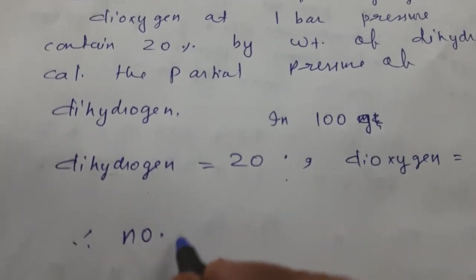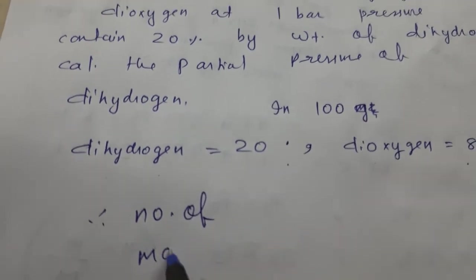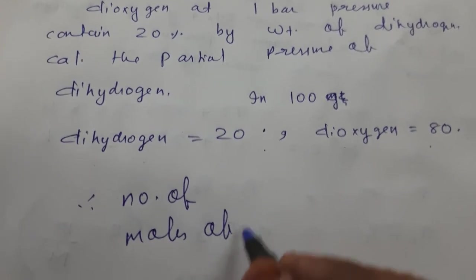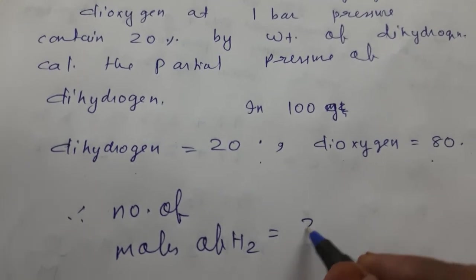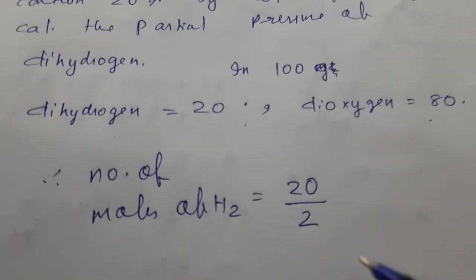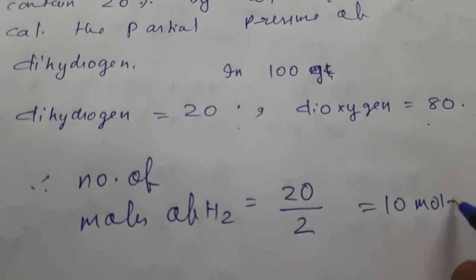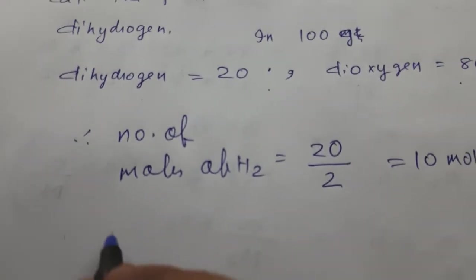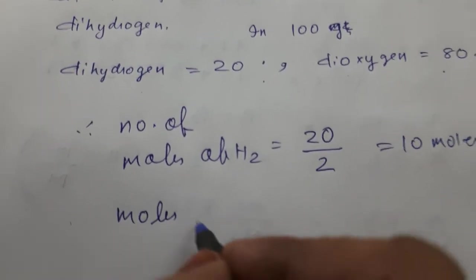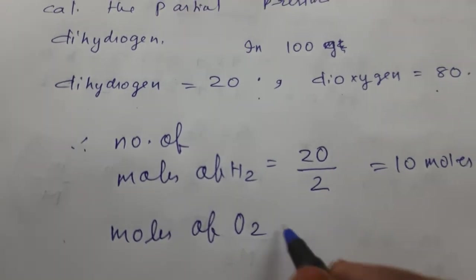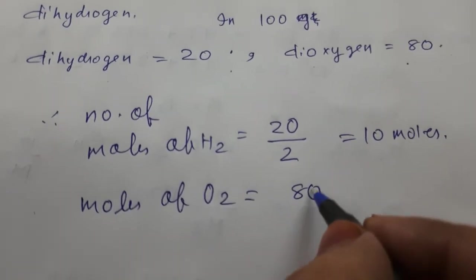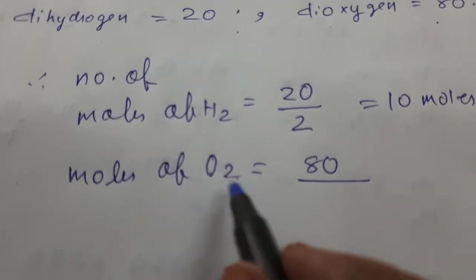Therefore, number of moles of dihydrogen equals mass given divided by molecular mass, which equals 20 divided by 2, equals 10 moles. Similarly, moles of dioxygen equals 80 divided by 32.